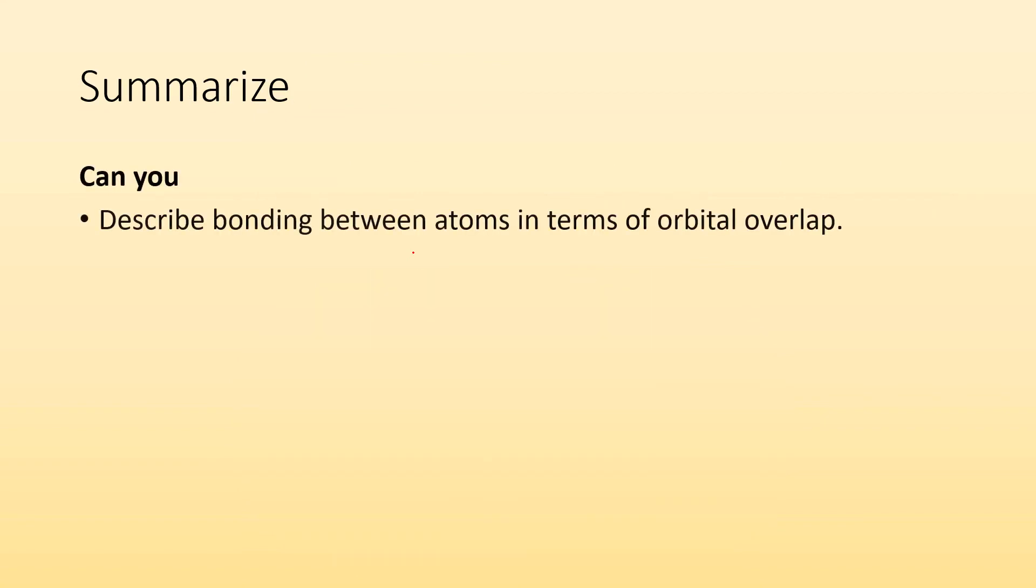So to summarize, can you describe bonding between atoms in terms of orbital overlap? I hope so. If not, too bad for you, I guess. Okay, bye.